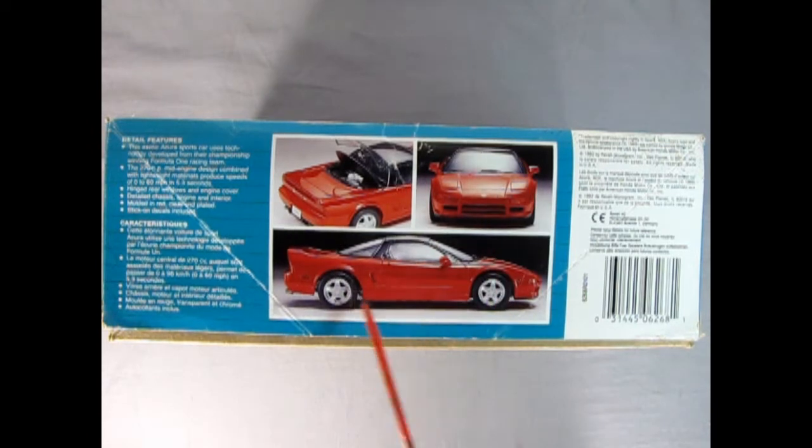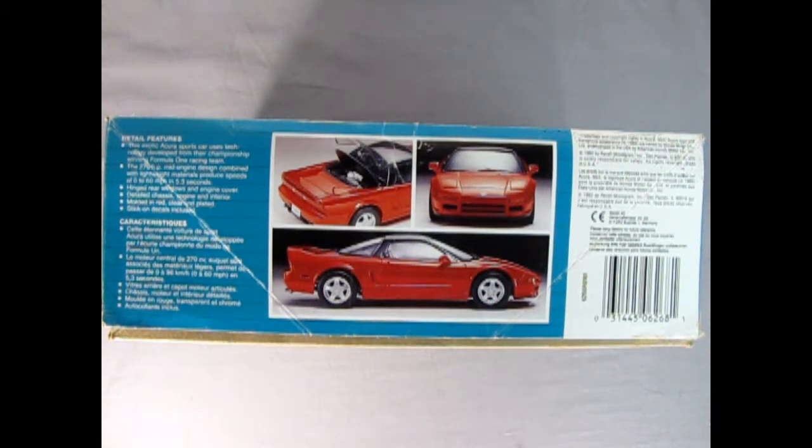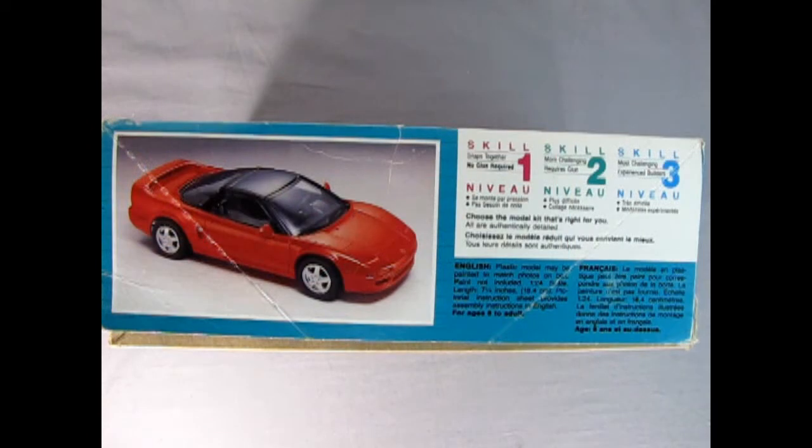Here's some nice pictures of our car and hopefully in the box it looks the same. And on this side of the box we get to read about the different skill levels, and keep in mind that this is a skill level one kit and will look like this once we get it all finished.